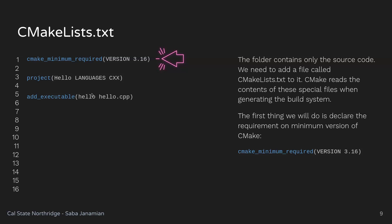Next is the project command. Any C++ project has a name, provided here. This project is called Hello. The LANGUAGES parameter lists the languages you want to support — CXX means C++ in CMake. After that, you have add_executable. When you finish your project, you want to create a final executable. The add_executable command takes a name and lists all the files to be compiled and linked together — whether you have one file or thousands, you list them all here.